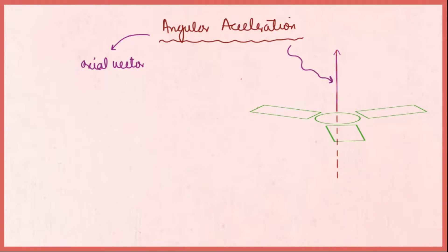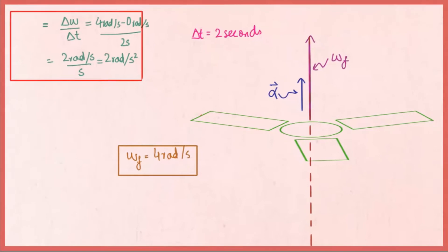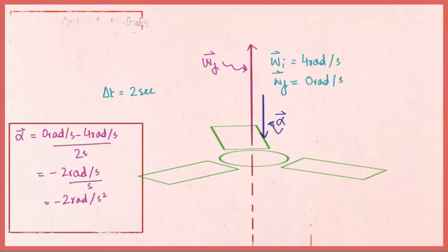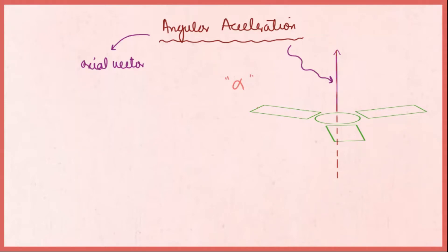Axial vectors are explained in the linked video. The direction of angular acceleration solely depends on the state of angular velocity — it is in the direction of angular velocity if increasing, and opposite if decreasing. Angular acceleration is represented by the symbol alpha, and its SI unit is radians per second squared.